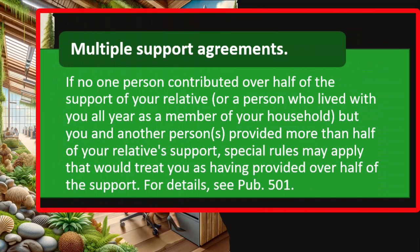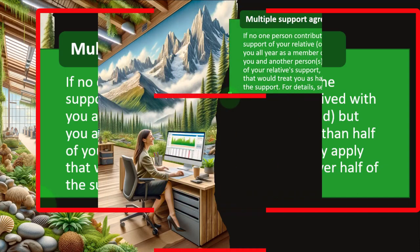Multiple support agreements: if no one person contributed over half of the support of your relative, or a person who lived with you all year as a member of your household, but you and another person together provided more than half of that relative's support, special rules may apply that would treat you as having provided over half of the support. Someone has to be able to claim this person. For details, see Publication 501.